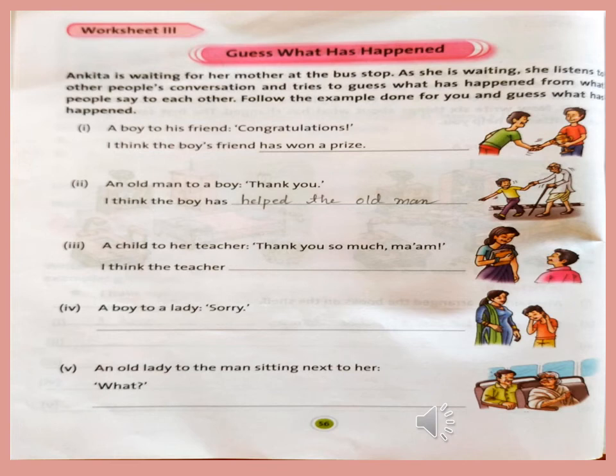Guess what has happened. Ankita is waiting for her mother at the bus stop. As she is waiting, she listens to other people's conversations and tries to guess what has happened from what people say to each other. Follow the example done for you and guess what has happened.